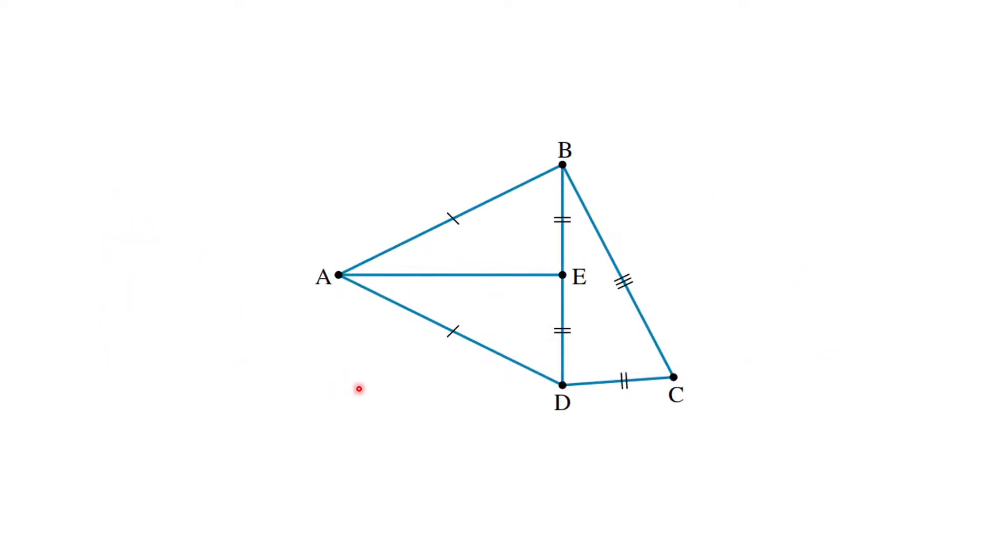Last one. So it's actually ABE and ADE that are congruent. Our reason is SSS. So we have this side marked to equal this side. This thing here marked to equal this thing here. And the third side is physically being used by both triangles. So, of course, it must be equal.